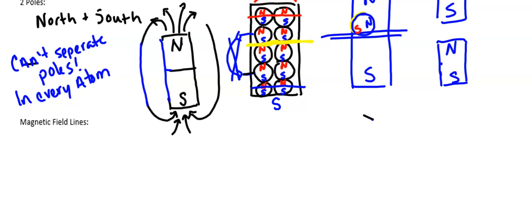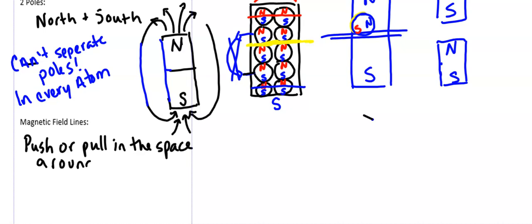So what do we want to write here for magnetic field lines? The push or pull in the space around a magnet. All right. So I think that's all we really need to write because we've taken an awful lot of pictures.